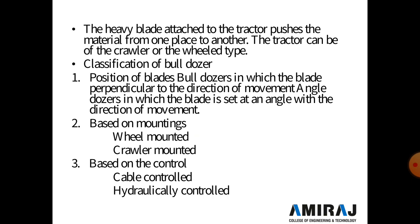Classification of the bulldozer is divided into three parts. First, by position of the blade: a straight bulldozer has the blade perpendicular to the direction of movement; an angle bulldozer has the blade set at an angle. Second, based on mounting: wheel-mounted or crawler-mounted. Third, based on control: cable control or hydraulic control — hydraulic jacks and hydraulic pipes are used in this type of bulldozer.